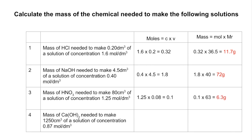For the last question, the volume of HCl is again in cm³, so we convert to dm³ first. Moles of calcium hydroxide = 0.87 × 1.25 dm³, giving those many moles. The mass = moles × Mr = 80.5 grams.